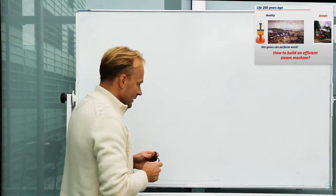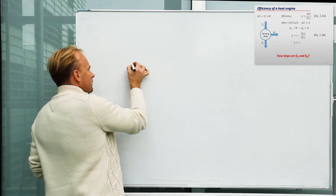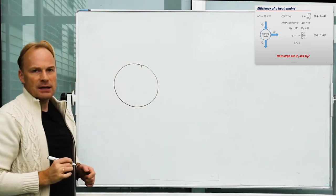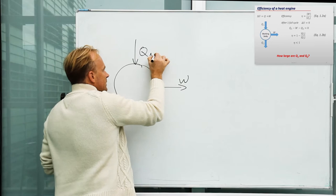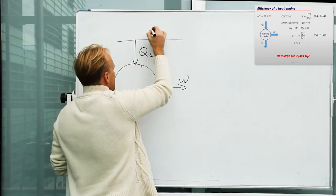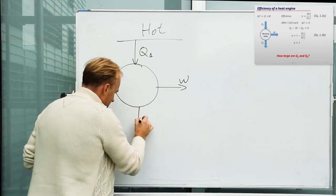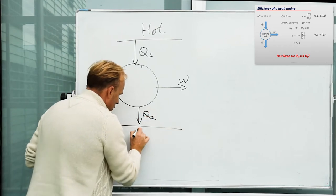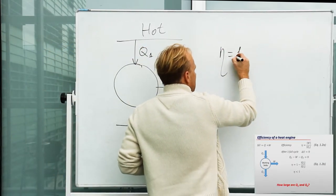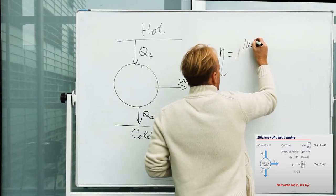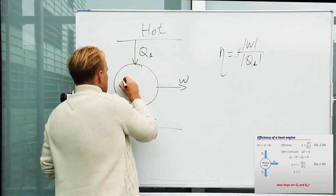So people started to think about how to build an efficient steam machine — an efficient heat agent that would transfer heat into work and do something useful with this energy. First attempts to build heat agents were unsuccessful. That's why people started to think about the model of a heat agent: it would have a working substance that produces work as a result of the transfer of heat to it, with heat transferred from a hot object, while part of the heat would be rejected to a cold object.